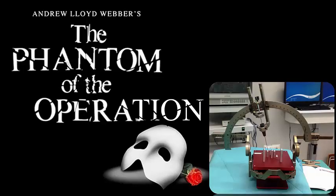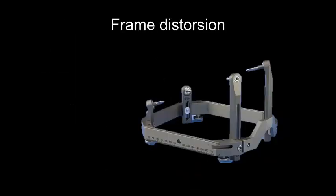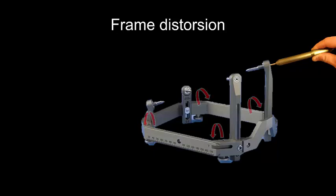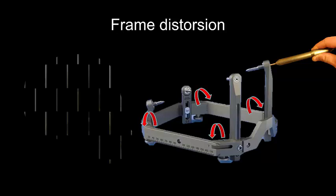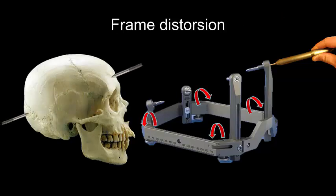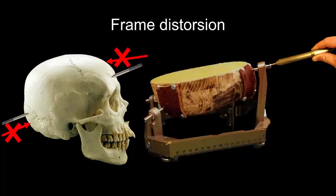We can, of course, use a phantom in order to evaluate the accuracy of the frame that we are using. Unfortunately, this does not take into account the distortion of the frame which can appear when the screws are applied to the head. This appears if the screws are tightened too much, and it is most pronounced if the screws are applied to the more slanting areas of the skull. This can quite easily be demonstrated using a model of the head.